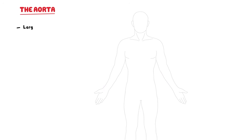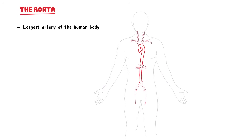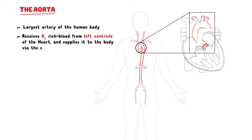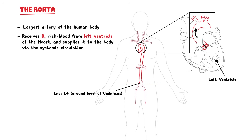The aorta is the largest artery in the human body, and arguably one of the most important. It receives oxygen-rich blood from the left ventricle of the heart and supplies it to the body via the systemic circulation. The aorta begins at the left ventricle and terminates at the level of L4, around the level of the umbilicus, and supplies a number of major arteries and vital organs.